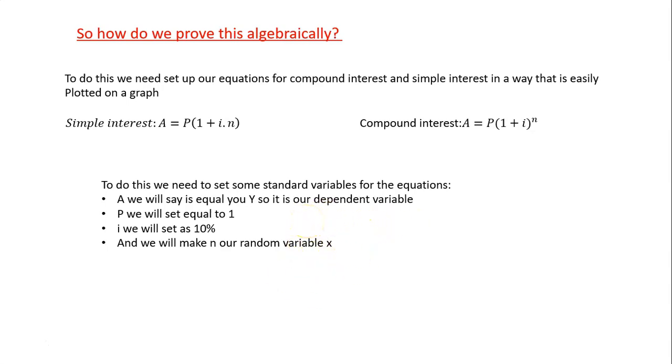And it's the dependent variable. We actually haven't changed anything about A. We've just made that A is now going to use the symbol y. P we're going to set equal to 1. So we're going to say that we're investing 1 Rand into the bank. So it's not something very realistic, but the reason we use it is so that we can make the equation as simple as possible and so that you can actually see the biggest difference on our graph later. And i will set as 10%, so 0.1. Because remember that if it's in 10%, we have to change it into decimal before we put it into our equation. And then we will make n our random variable x. So time is going to be our random variable.